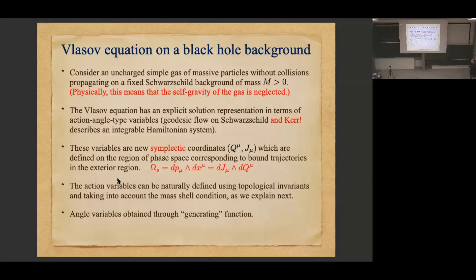You can solve not only one geodesic but actually the whole flow. If you can solve for the flow, then you can also solve the Vlasov equation. The idea is to introduce new coordinates on the cotangent space which are symplectic — that means they preserve the form of the symplectic structure, which was dp_μ dx^μ. We are looking at the uncharged case: a simple gas of massive identical particles with no charge.